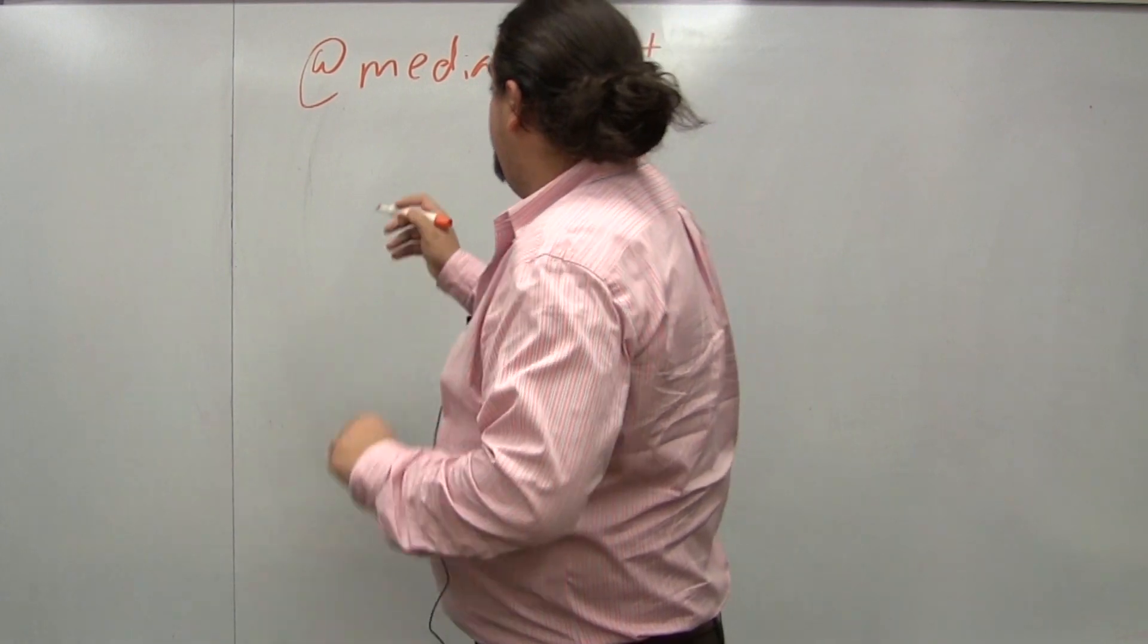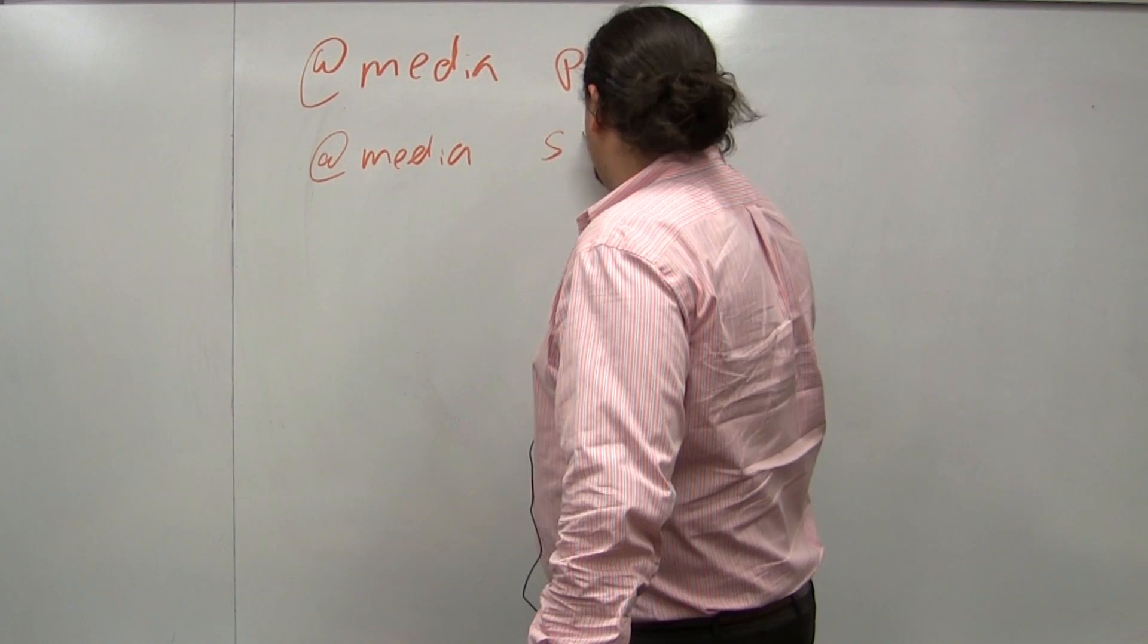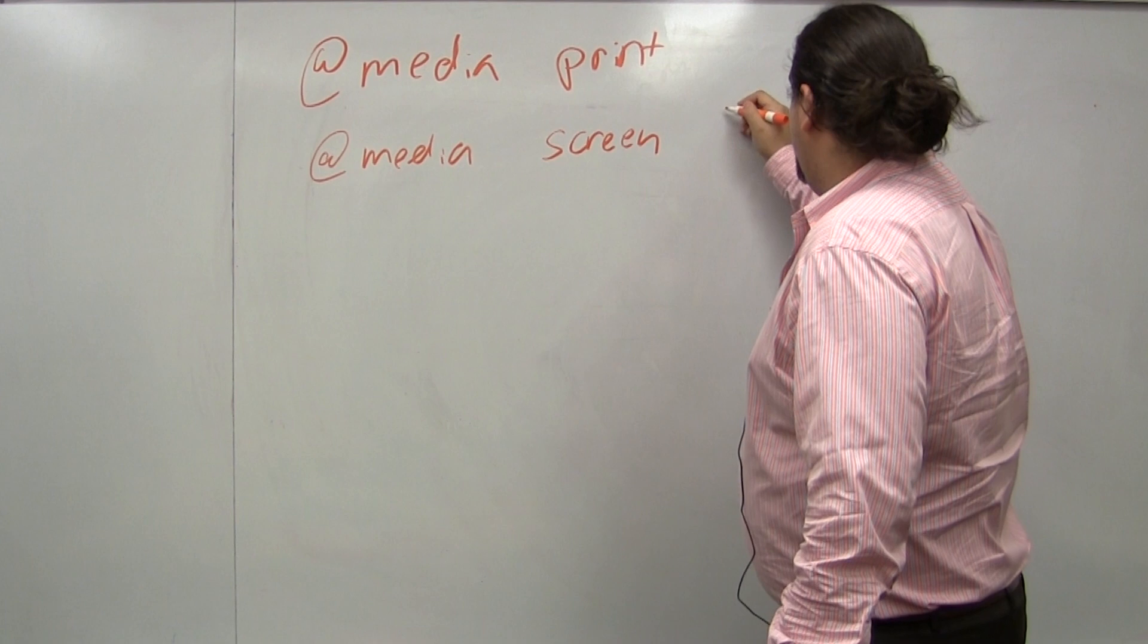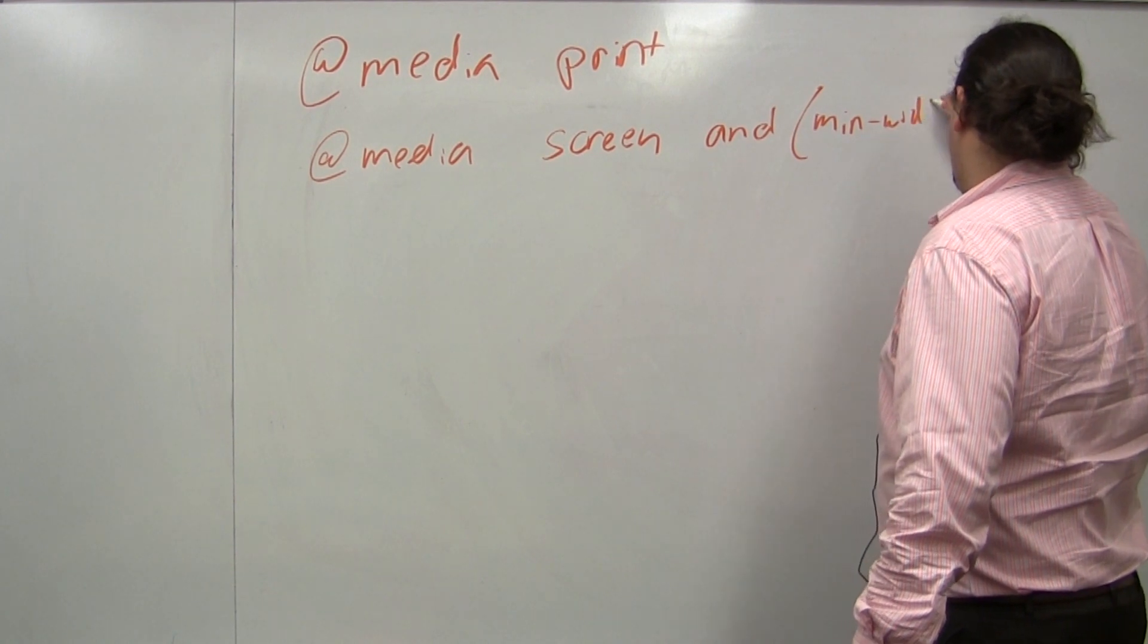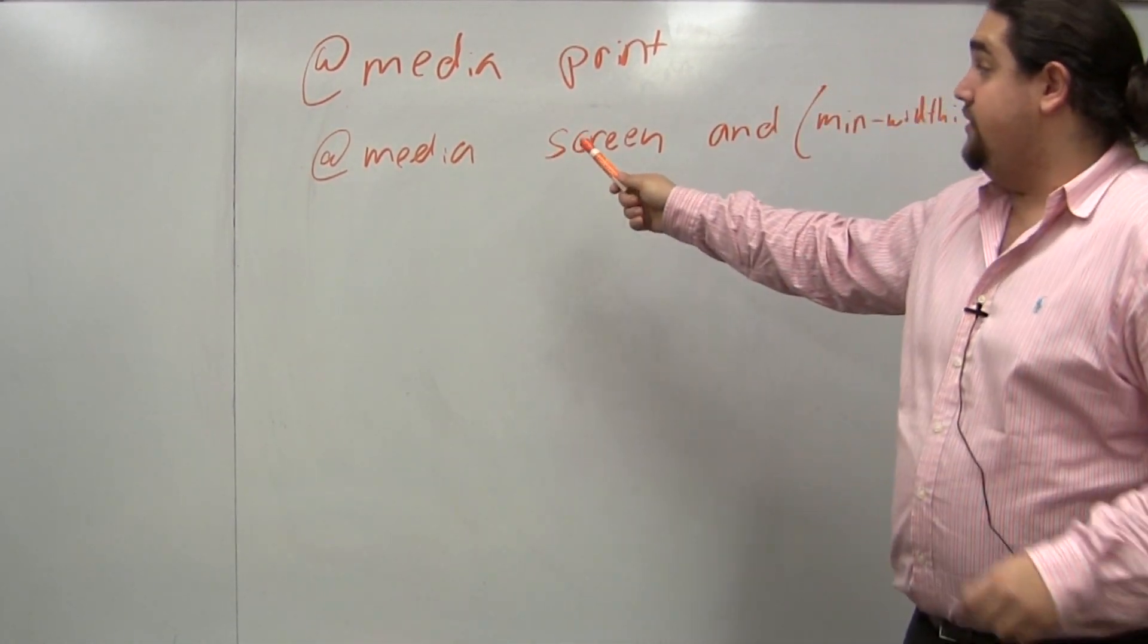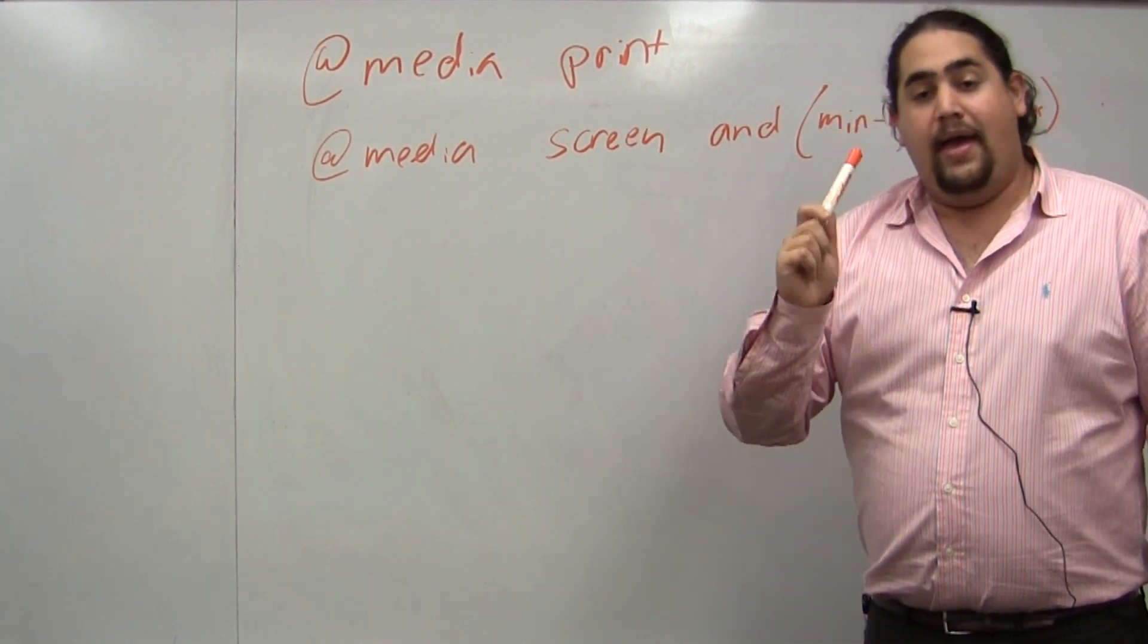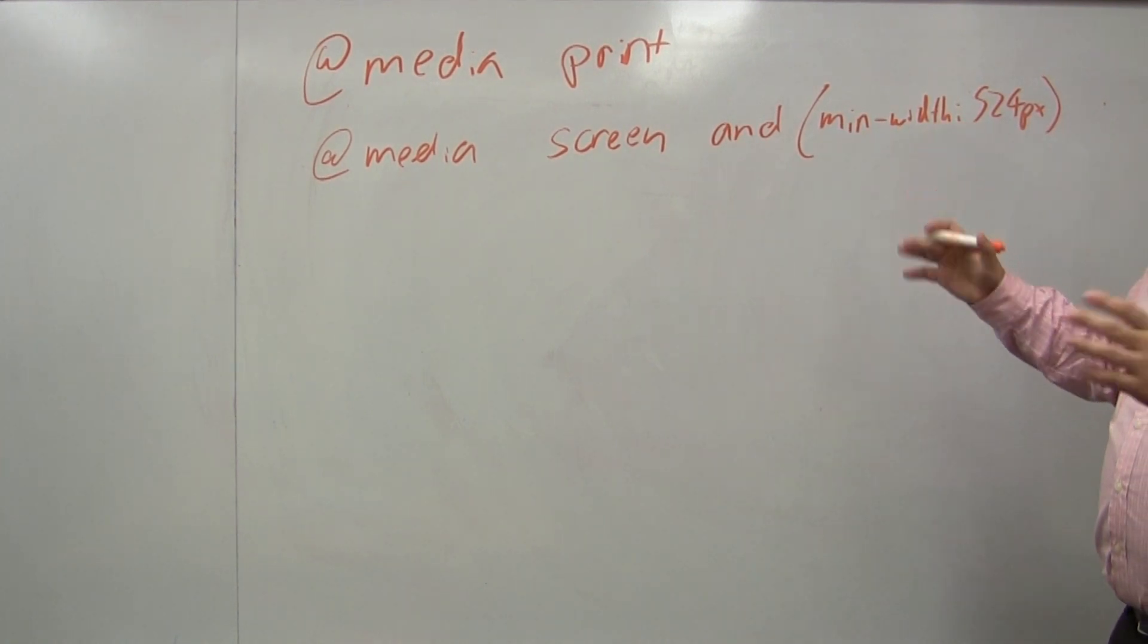Now what we can do with media queries is we can do @media, for instance, screen, to target screen devices, but then we could also do and min-width 524 pixels. Media queries, what this media query does is the first one just targets print, the second one targets screen media, but will only match if the width of the screen, or of the viewport really, is less than 524 pixels.